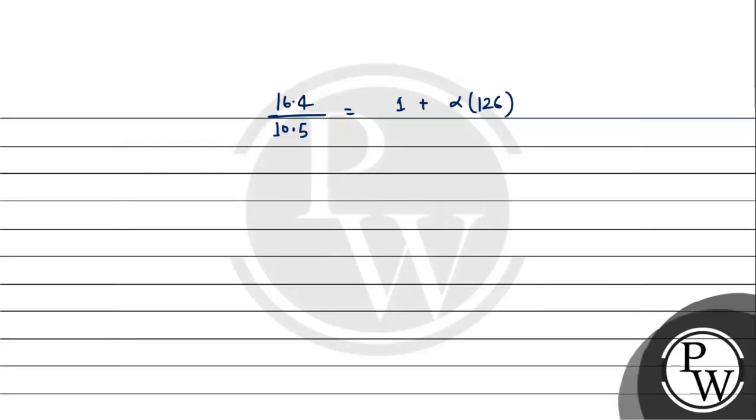Now we'll divide. 16.4 divided by 10.5 equals 1.56. So 1.56 minus 1 equals alpha into 126. Therefore, alpha equals 0.56 upon 126.